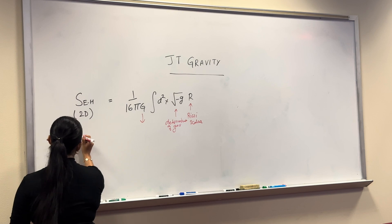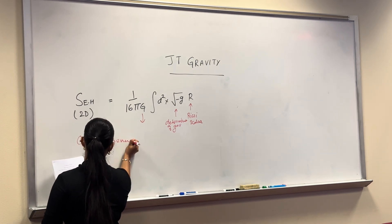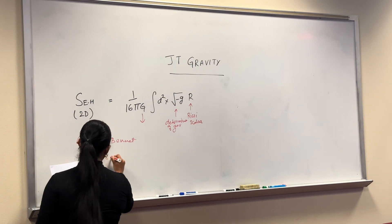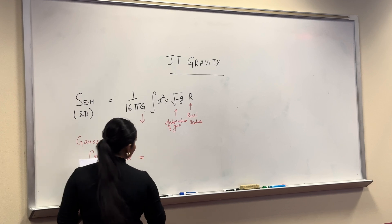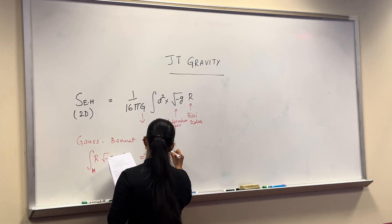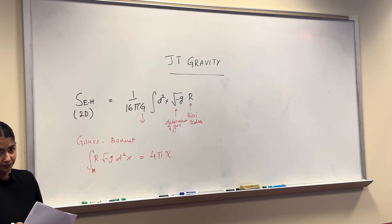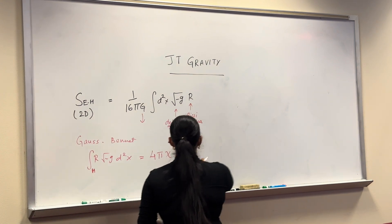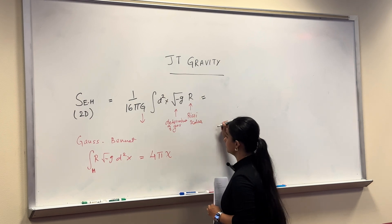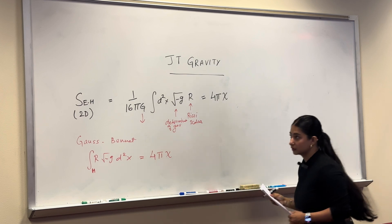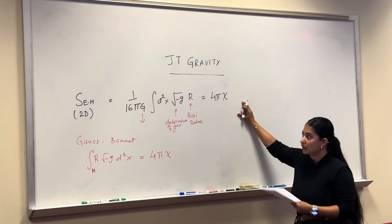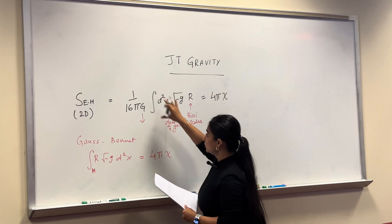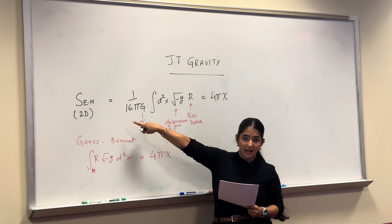What this means is that from the Gauss-Bonnet theorem, which says that if we integrate the Ricci scalar over a two-dimensional manifold, it gives us a topological invariant. This topological invariant only depends on the topology and does not include any dynamics due to the metric. So essentially, because of the Gauss-Bonnet theorem, this does not depend on the metric — instead it's topological. Now if this is the case, we don't really have any use for it because there is no dynamics due to gravity. In order to rectify this problem, we couple this action to a dilaton field.